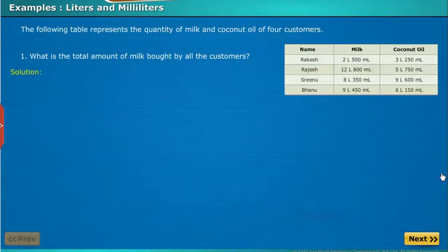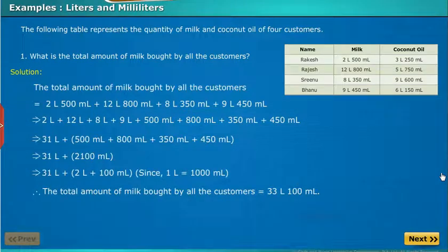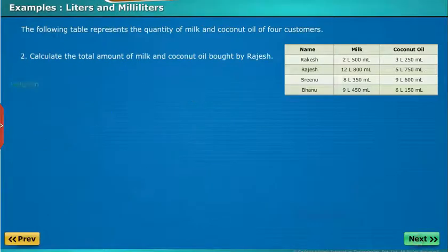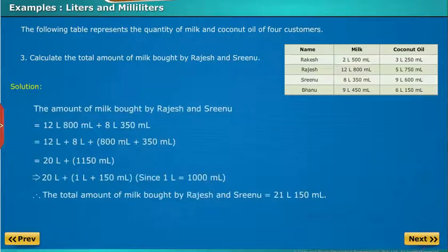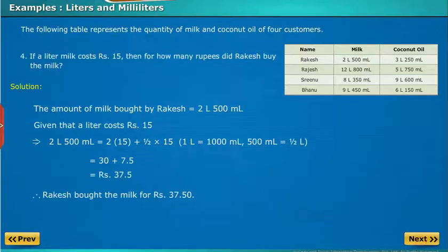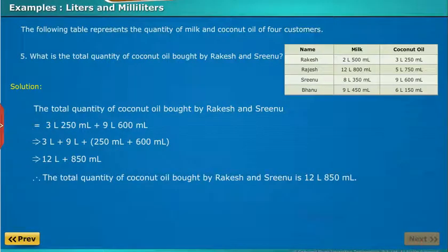The following table represents the quantity of milk and coconut oil of four customers. What is the total amount of milk bought by all the customers? Calculate the total amount of milk and coconut oil bought by Rajesh. If a liter of milk costs rupees 15, then for how many rupees did Rakesh buy the milk? What is the total quantity of coconut oil bought by Rakesh and Srinu?